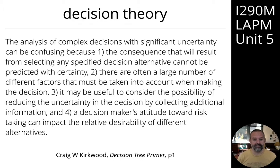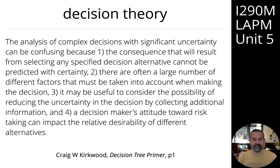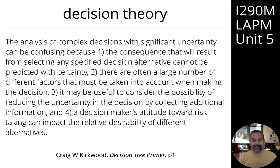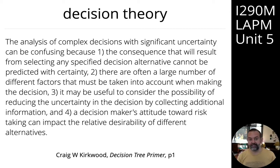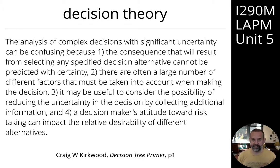The analysis of complex decisions with significant uncertainty can be confusing because, number one, the consequence that will result from selecting any specified decision alternative cannot be predicted with certainty. Number two, there are often a large number of different factors that must be taken into account. Three, it may be useful to consider reducing uncertainty by collecting additional information. And four, a decision maker's attitude towards risk-taking can impact the relative desirability of different alternatives.